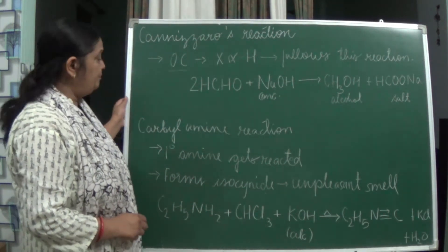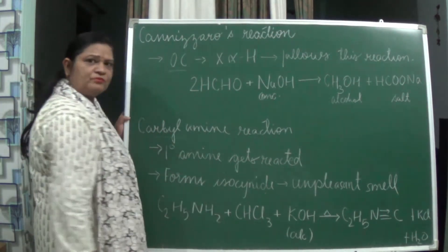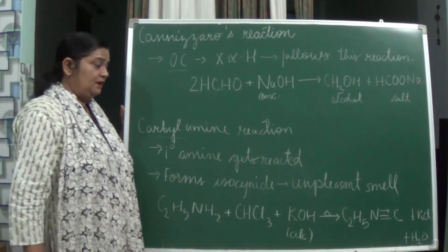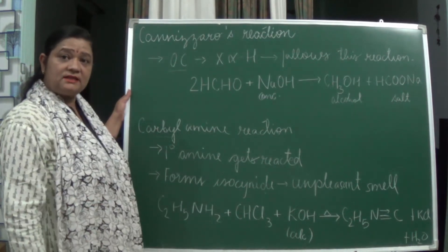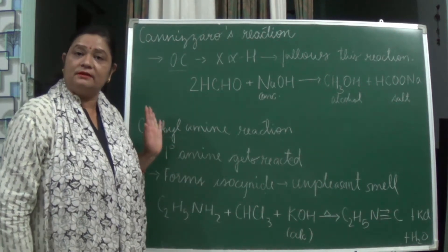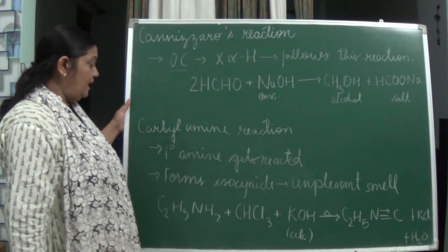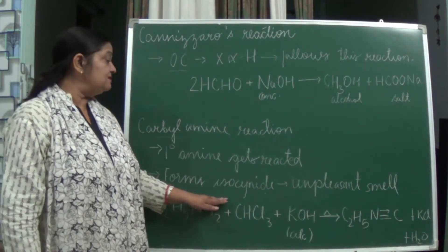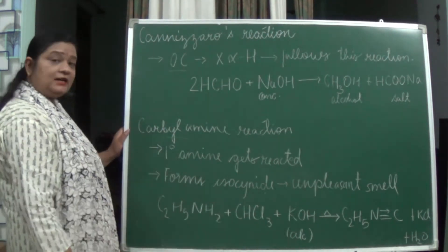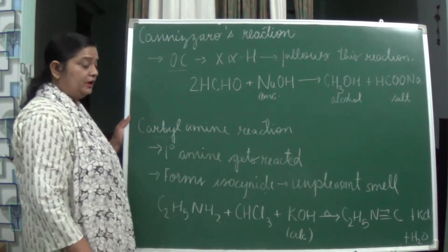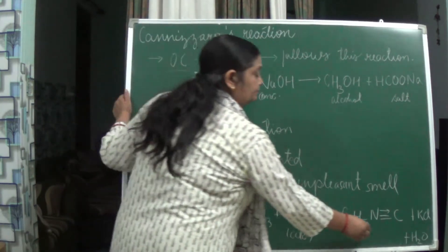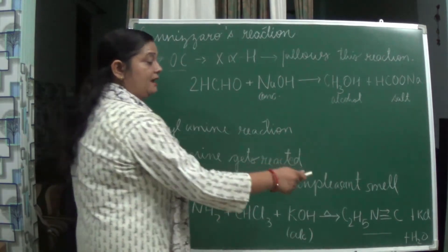Now let us look at the carbylamine reaction, which is entirely different from Cannizzaro's. In this reaction, only primary (1°) amines react — not secondary or tertiary amines. The primary amine reacts with chloroform (CHCl₃) and alcoholic KOH. On heating, isocyanide is formed, which has an unpleasant smell.